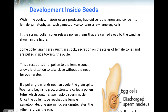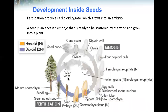If a pollen grain lands near an ovule, the grain splits open and begins to grow a structure called a pollen tube, which contains two haploid sperm nuclei. Once the pollen tube reaches the female gametophyte, one sperm nucleus disintegrates and the other fertilizes the egg. Fertilization produces a diploid zygote, which grows into an embryo. A seed is an encased embryo that is ready to be scattered by the wind and grow into a plant.